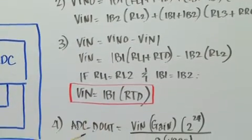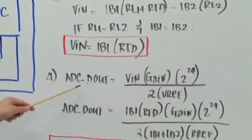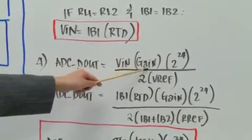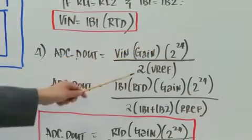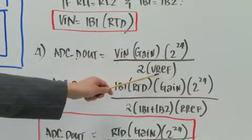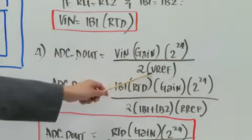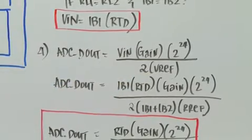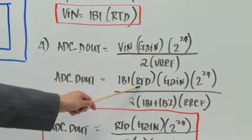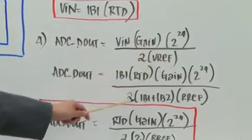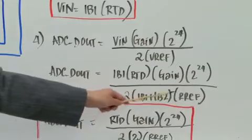So the output code of the ADC is VIN times the gain times 2 to the 24, 24 because it's a 24 bit ADC, times 2 divided by 2 times Vref. And if you plug in your equations for VIN as IB1 times RTD, and your Vref as IB1 plus IB2 times Rref.